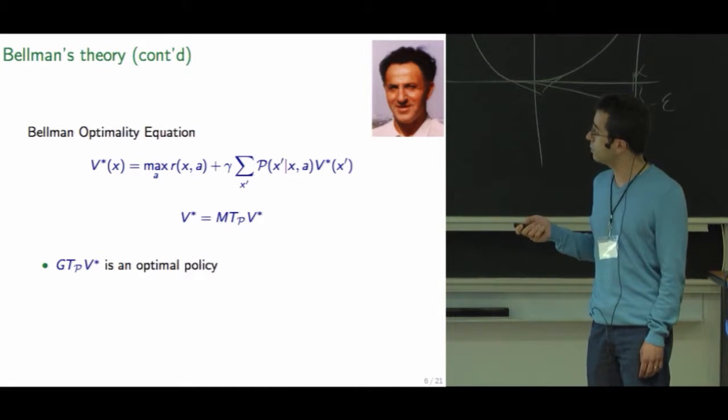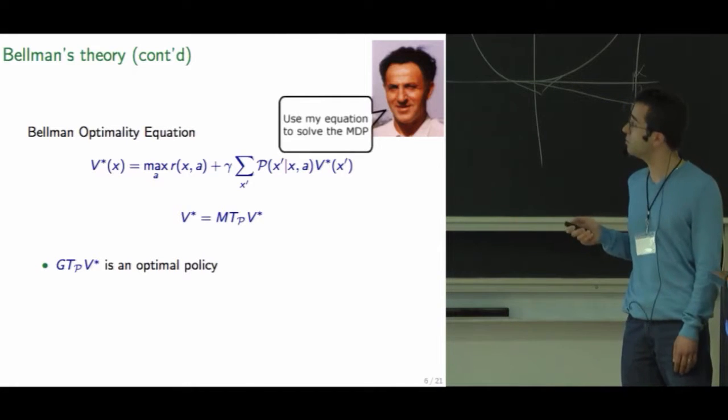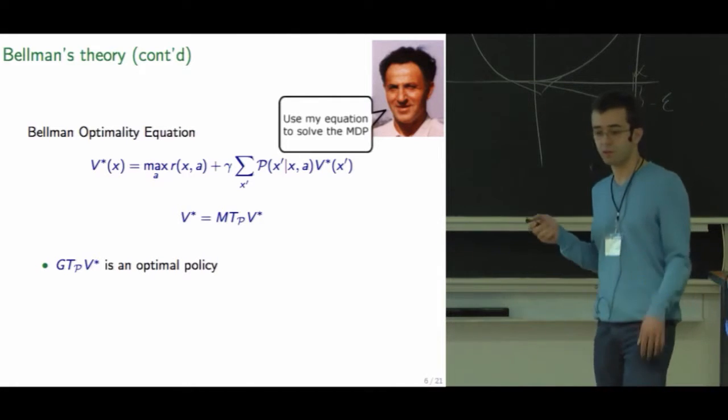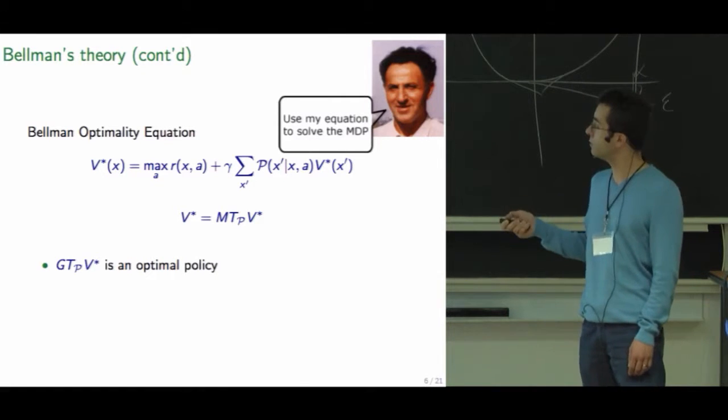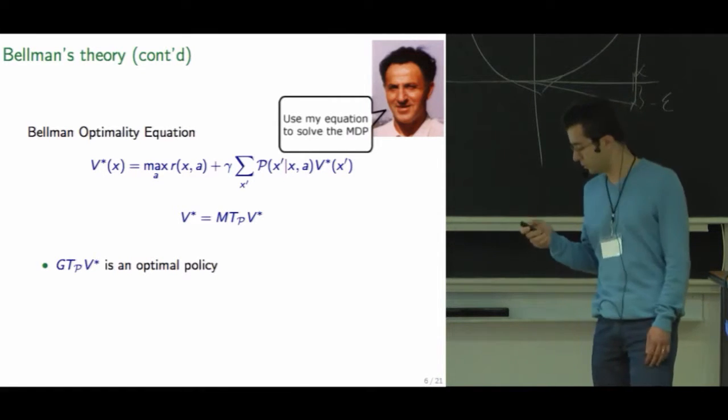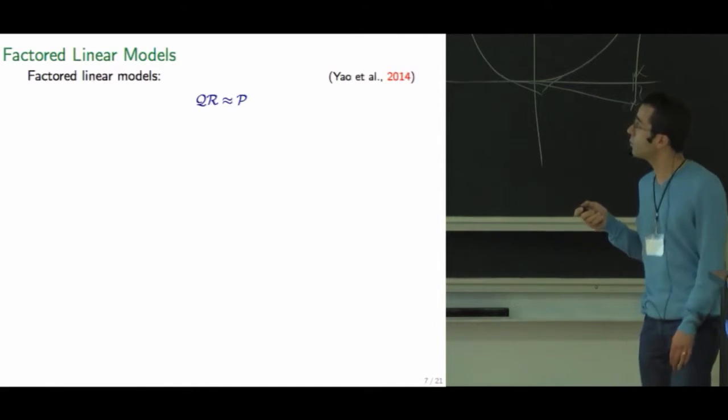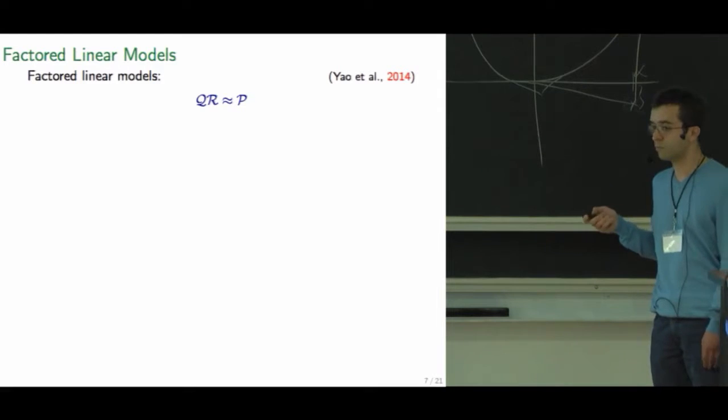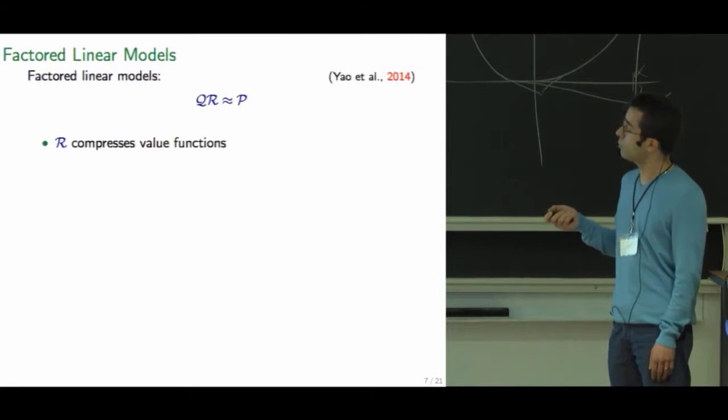We have this compact formulation and the optimal value function as a fixed point of this MT_P operator and we can get an optimal policy by taking this greedy instead of the max. But one thing is that we don't have access to P and if we did, this is often intractable or very hard.